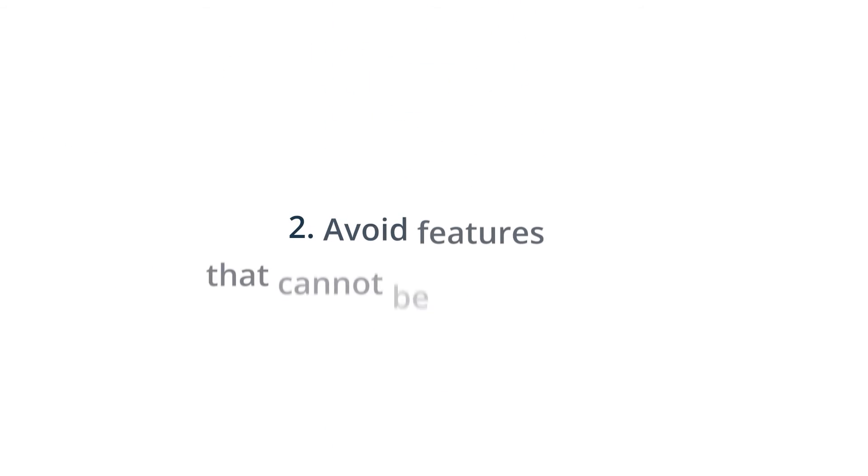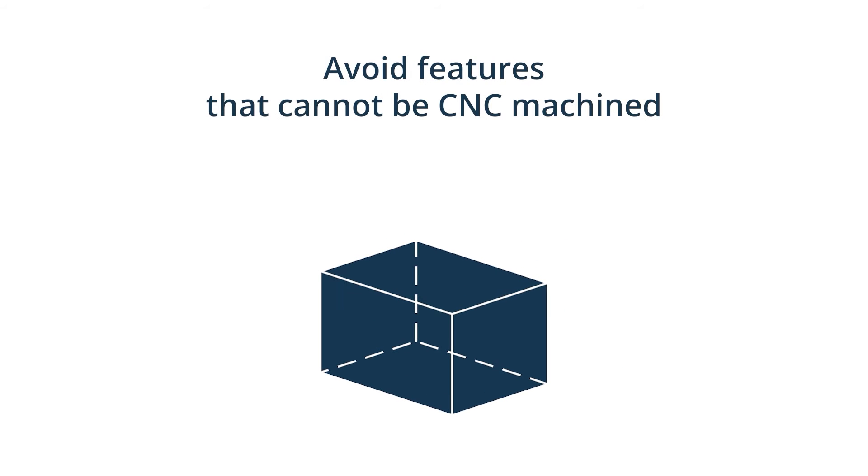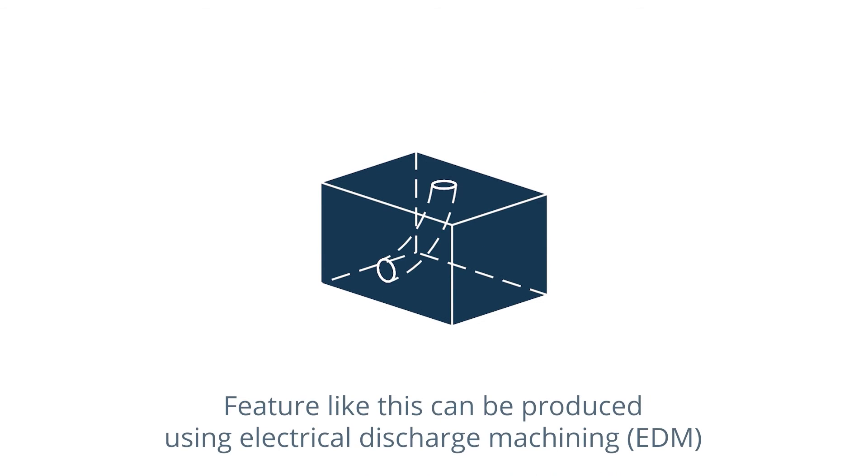2. Avoid features that cannot be CNC machined. An example of a feature that CNC mills, lathes, or drills cannot produce is curved holes. If you require this feature or others that can't be machined for your design, you can use electrical discharge machining instead.